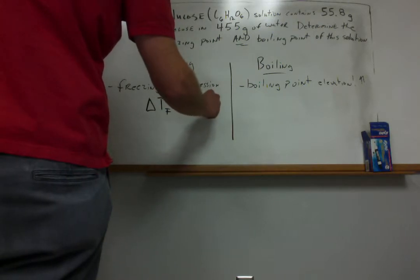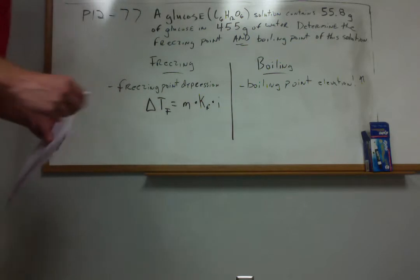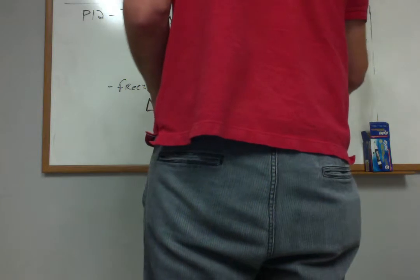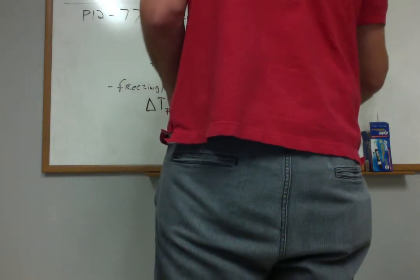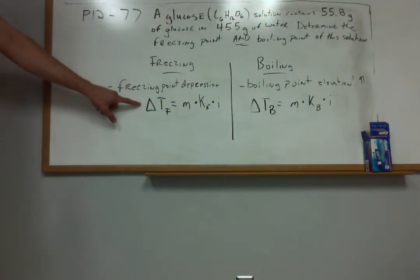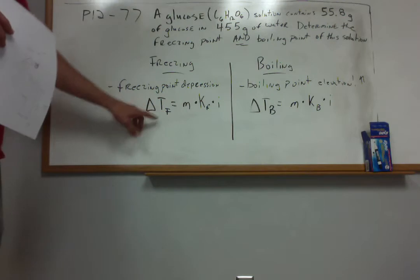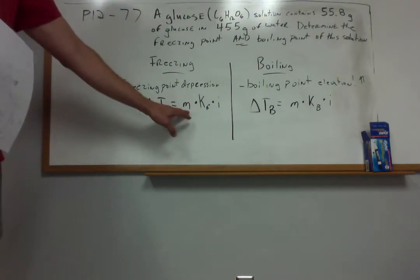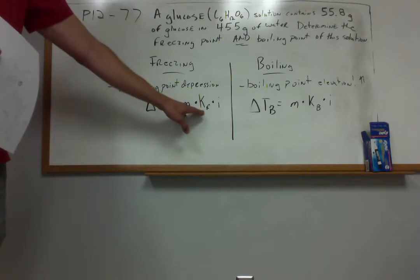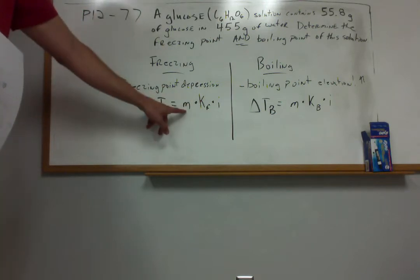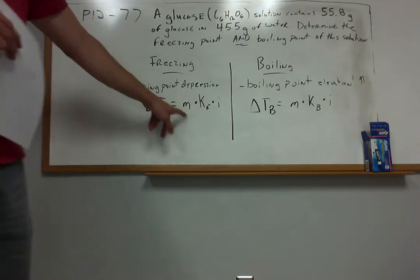These equations are important to remember for your examination that will be coming up very soon. The equations look very similar to one another. The form is delta triangle TF, that's the change in the freezing point, is equal to the molality of the solute times the freezing point depression constant times I, where I is the Van't Hoff factor. M is the molality, this is with the L, moles per kilogram solvent.